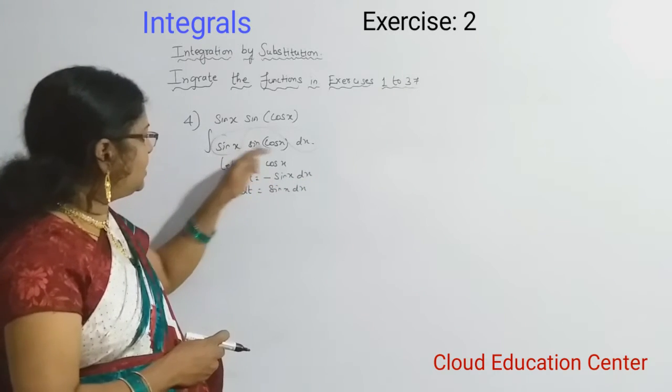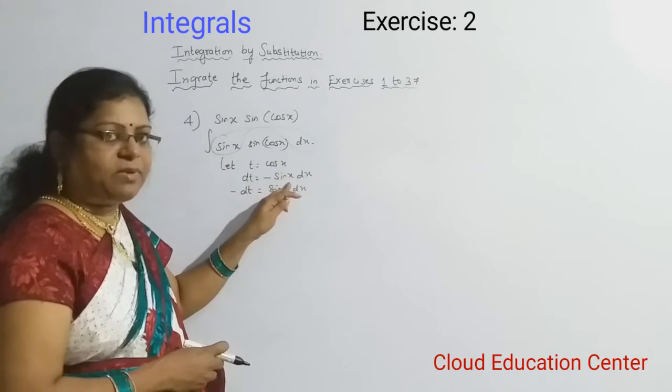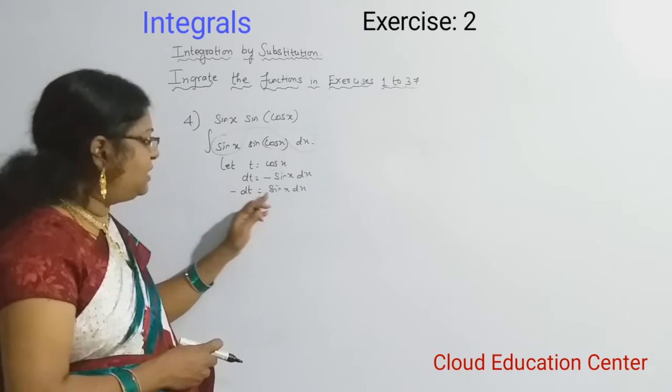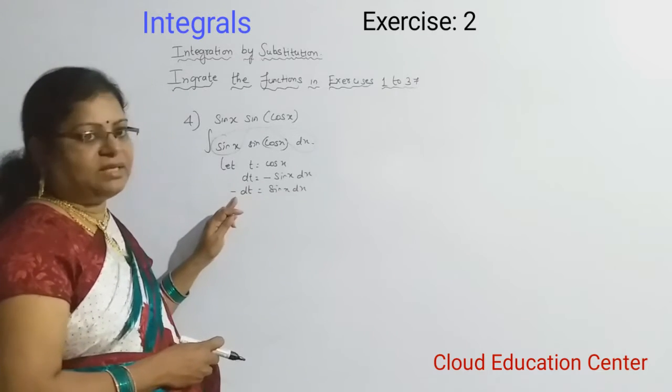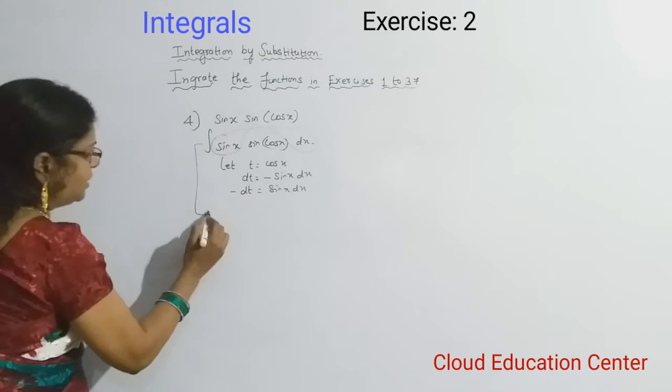But here in this question, minus is not there, but here we are getting minus. So we are moving minus from right-hand side to the left-hand side. That means sin x dx is nothing but minus dt. We have sin x dx. We will substitute in this question.